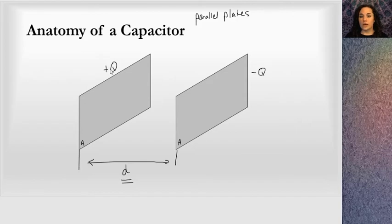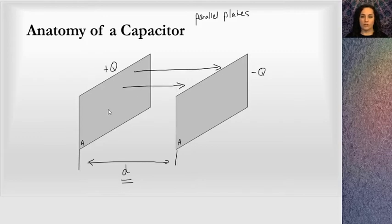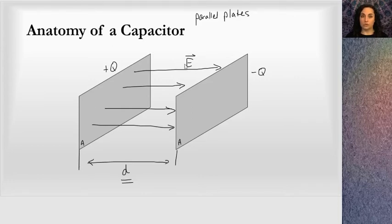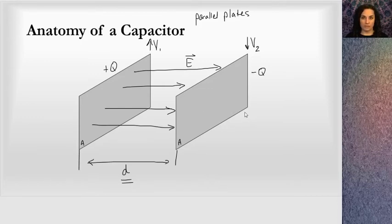Going back to the fact that we have charges held a distance apart, we know there's going to be an electric field in the region between these two plates. Electric fields point from positive to negative, so I can draw an electric field in here between the two plates — they start at the positive charge and end at the negative charge. Electric field lines flow from high potential to low potential. So V1 at the positive plate is the higher voltage, and V2 at the negative plate is the lower voltage. The charge on the plates causes an electric field and a voltage, and the charge is affected by the capacitor's ability to hold charge, which depends on the area and the displacement.